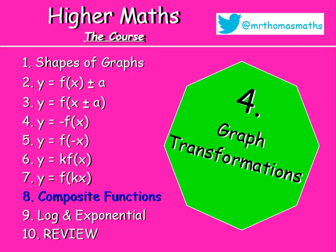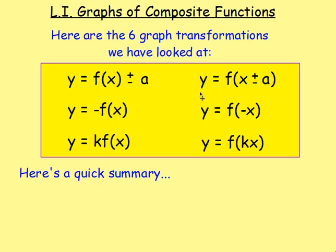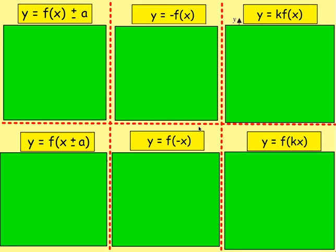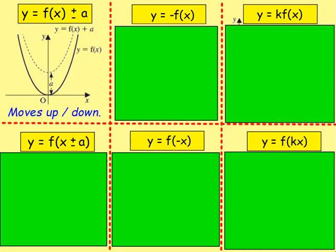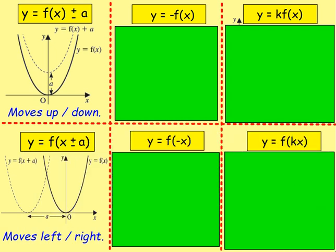What we have just done is look at all six of the graph transformations that you get in higher. Let's have a quick summary of each one because you will need this for moving on. So y equals f of x plus or minus some number, that will shift the graph up or down. So a plus moves the graph up vertically and a minus will move it down. If you have y equals f of x plus or minus some number, that is when the graph shifts to the left or the right. Remember a positive moves the graph in the negative direction and a negative will move the graph in the positive direction.